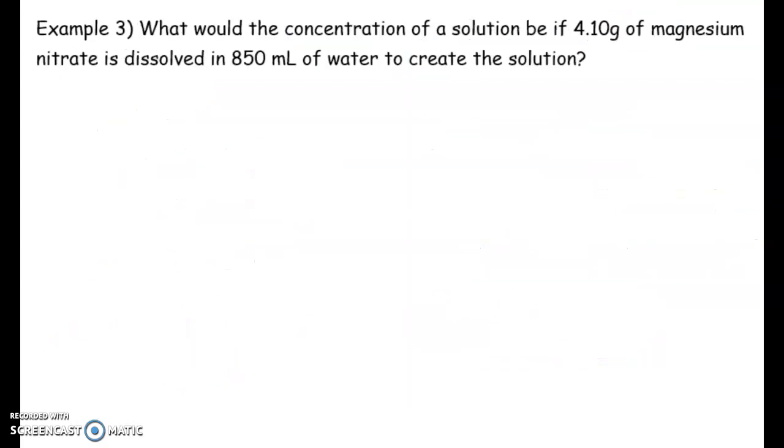Now, we can also incorporate what we learned last unit. So instead of being given the mole value, we could be given the mass. So for example, what would the concentration of a solution be if 4.10 grams of magnesium nitrate is dissolved in 850 milliliters of water to create the solution.